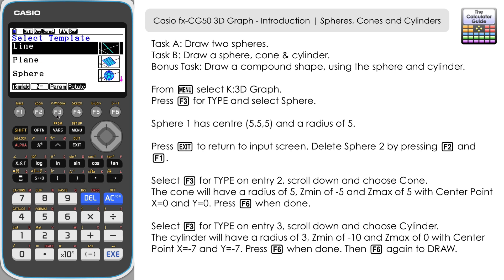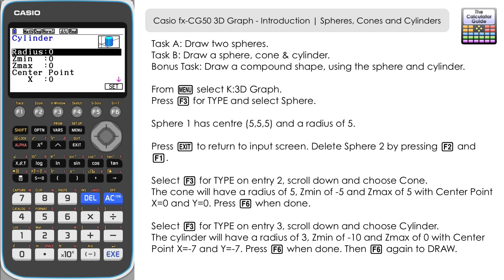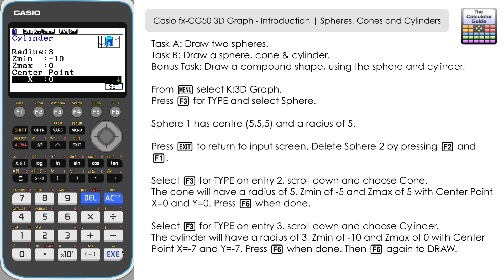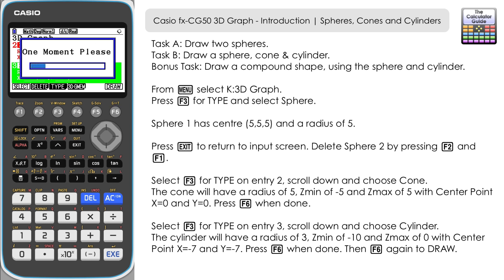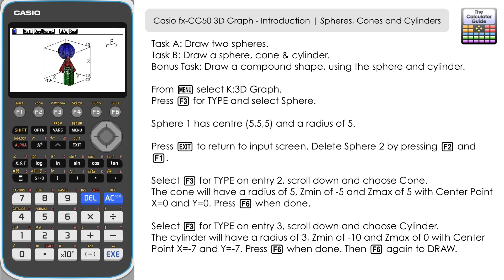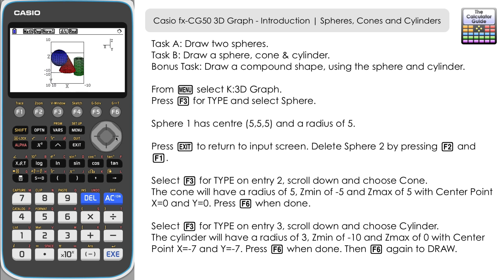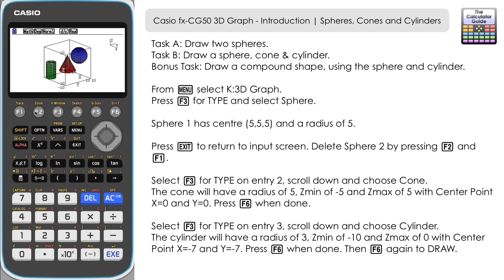Scroll down to the third entry for a cylinder. Select cylinder and change the radius to 3. Set it from z negative 10 up to 0, making it half the height of the view window. To position it away from the cone and sphere, set the center point for x and y as negative 7 for both. Press F6 to set, then F6 again to draw. Here we have all three objects — a sphere, a cone and a cylinder.